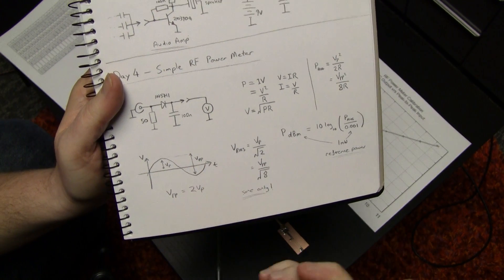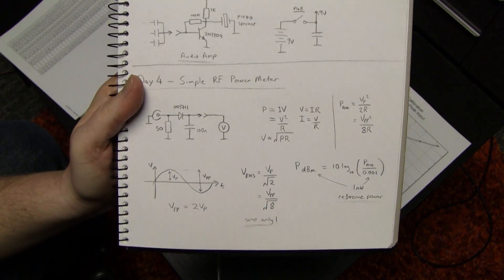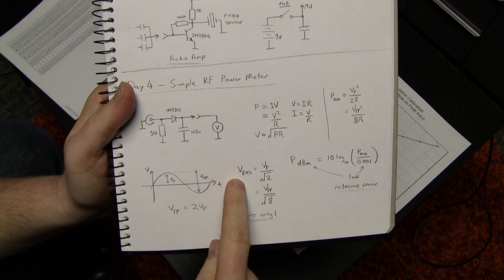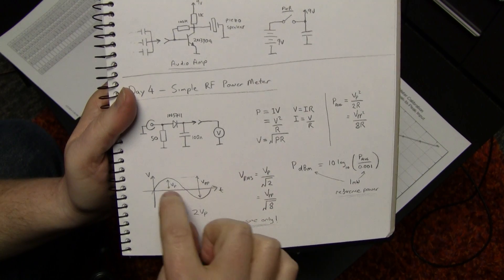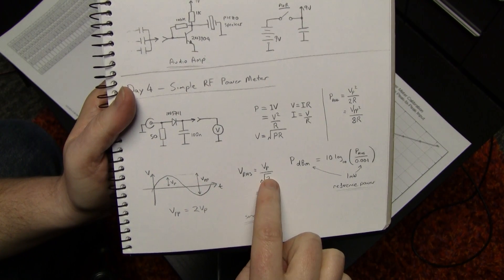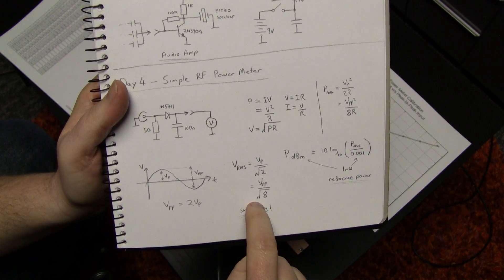You can do the math and work that out yourself. Just have a look at RMS on Wikipedia. There's a pretty good article about how it's defined, and the important thing to know is that VRMS is basically the peak voltage, just from the zero from the midline to the peak, divided by root 2, or if you're measuring peak to peak, it's divided by root 8.